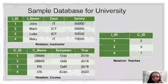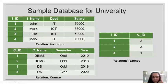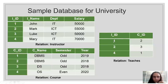The database we are using for these lectures on relational algebra contains an instructor relation having ID, name, department, and salary of instructors, and a relation named course which has ID, name, semester, and year. It also contains a teachers relation that shows the relation between instructor and course — how they are connected. You can see there's an I_ID which shows that instructor one is connected to course ID two, and course ID two is DBMS and instructor one is John, so John teaches DBMS.